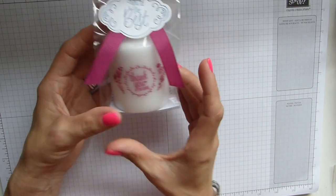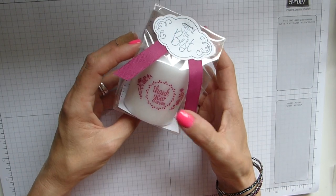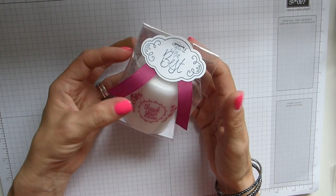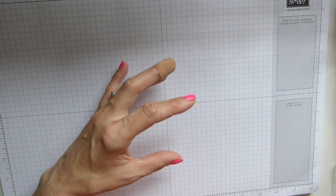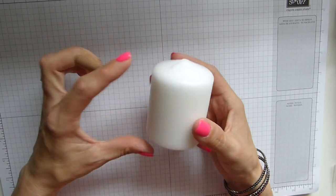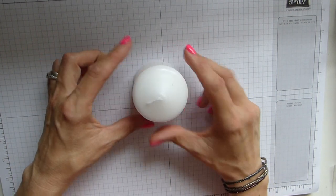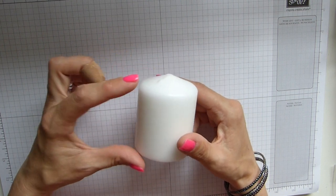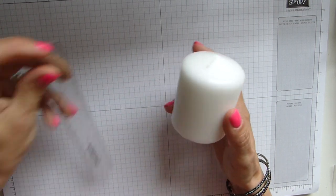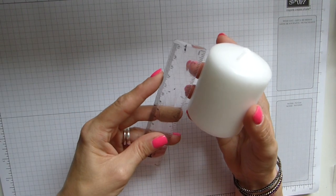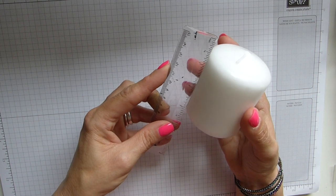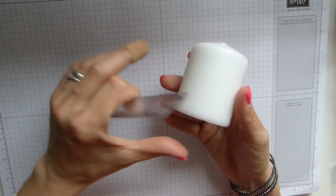I'm going to show you just very quickly how I've put this all together. First of all, you obviously need your candle. These are a pack of four that I got from Ikea and I think they're three inches high.